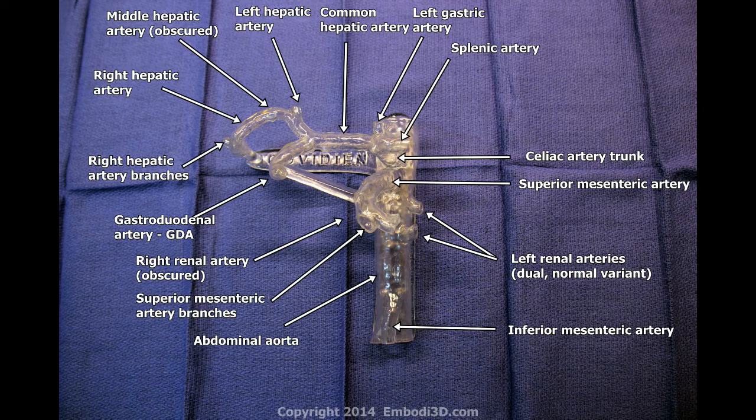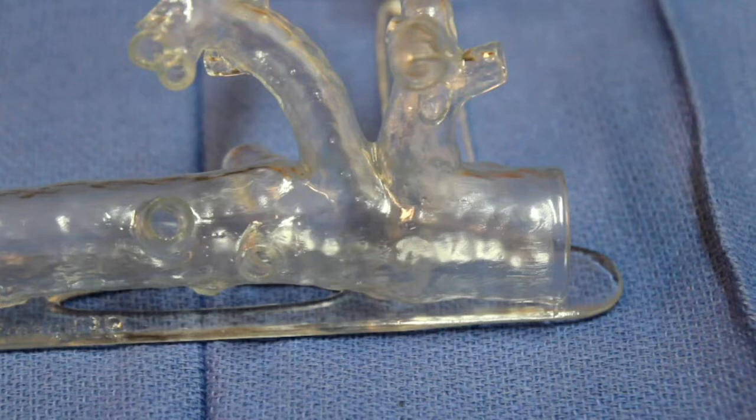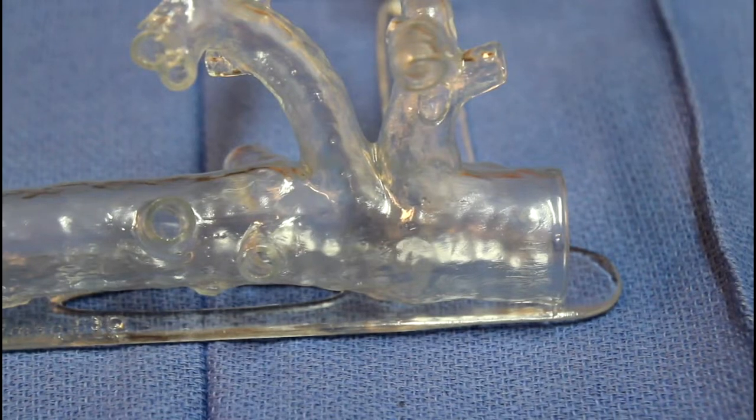Start by placing your model on a flat surface. As you will be getting the model wet, you may want to place it on an absorbent material like a towel. If the model is going to be utilized extensively, you may want to secure it with clothespins or a clamp to prevent it from sliding.